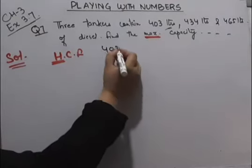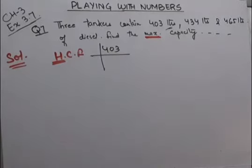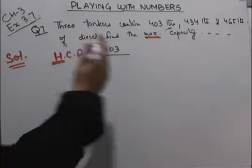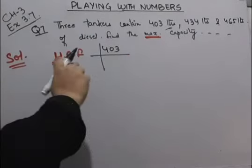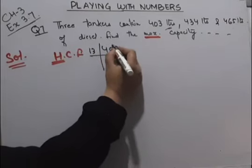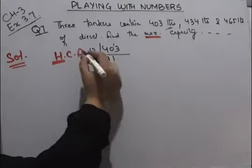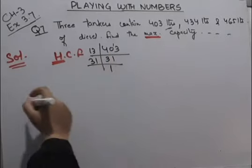So starting with the factorization of 403. This is not divisible by 2, not by 3, not even by 7. Now we will come to 13. 13 threes are 39, 1 carry, 13 plus 1 is 14. 31 is a prime number, so 31 times 13.